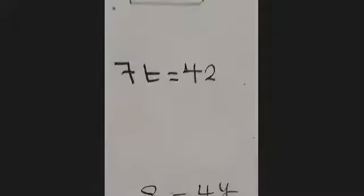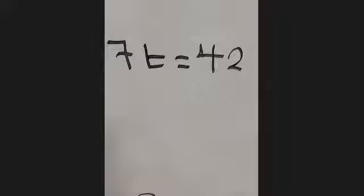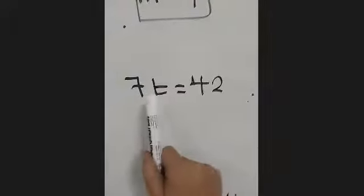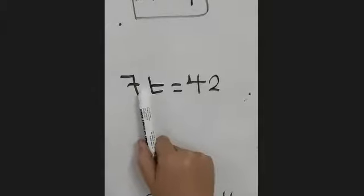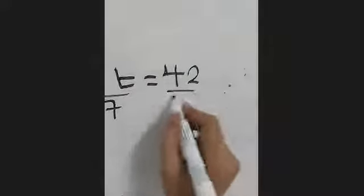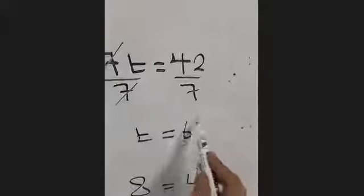Here is another one: 7t equals 42. What's between 7 and t? Multiplication. If we have multiply, what do we need to do? Divide. I will divide both sides by the number beside the variable — that's 7. The sevens cancel, leaving t. 42 divided by 7 is 6, as Yazid said.